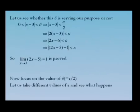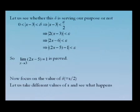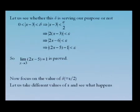Now let us verify whether this delta works. 0 < |x − 3| < δ implies |x − 3| < ε/2, because δ = ε/2, which implies |2(x − 3)| < ε, which implies |2x − 6| < ε, which implies |2x − 5 − 1| < ε. This clearly satisfies the definition. Hence the function (2x − 5) has limit 1 as x tends to 3.